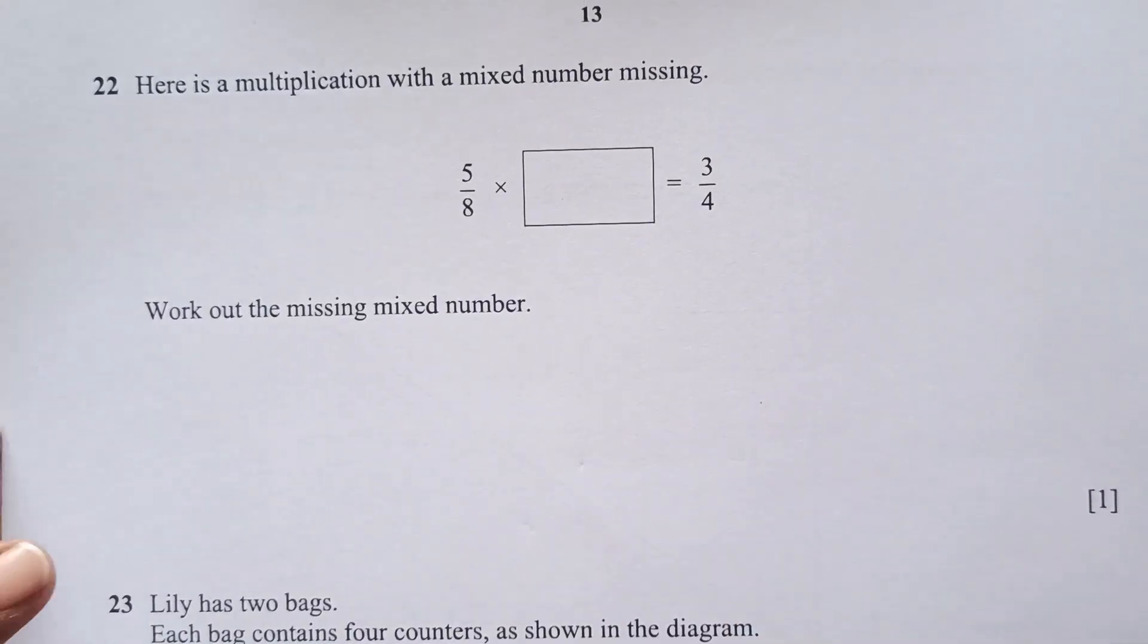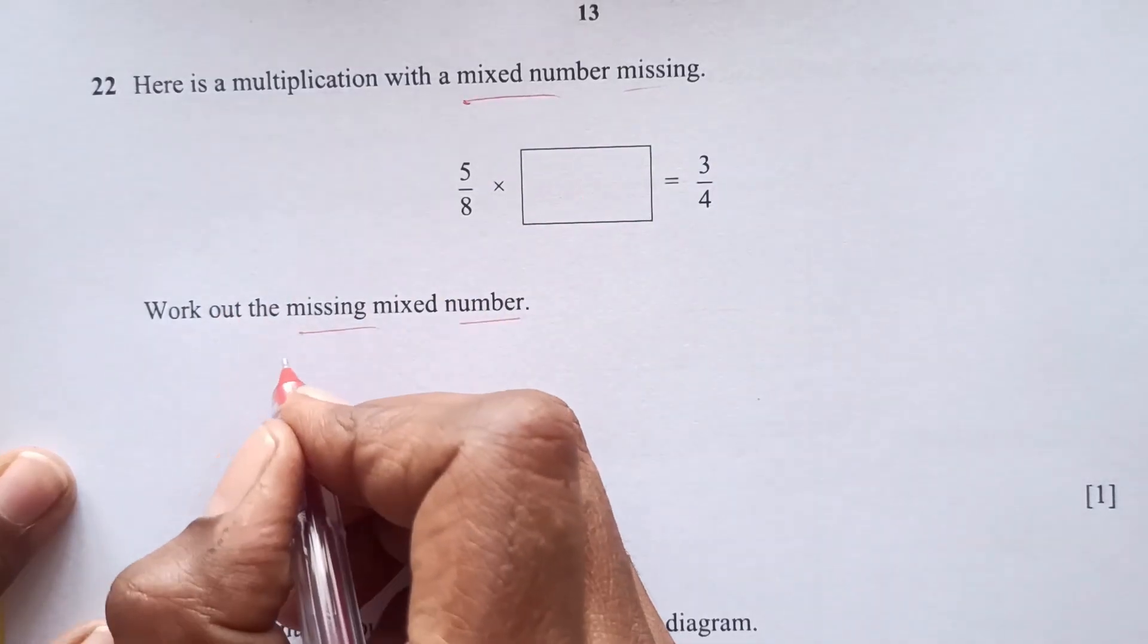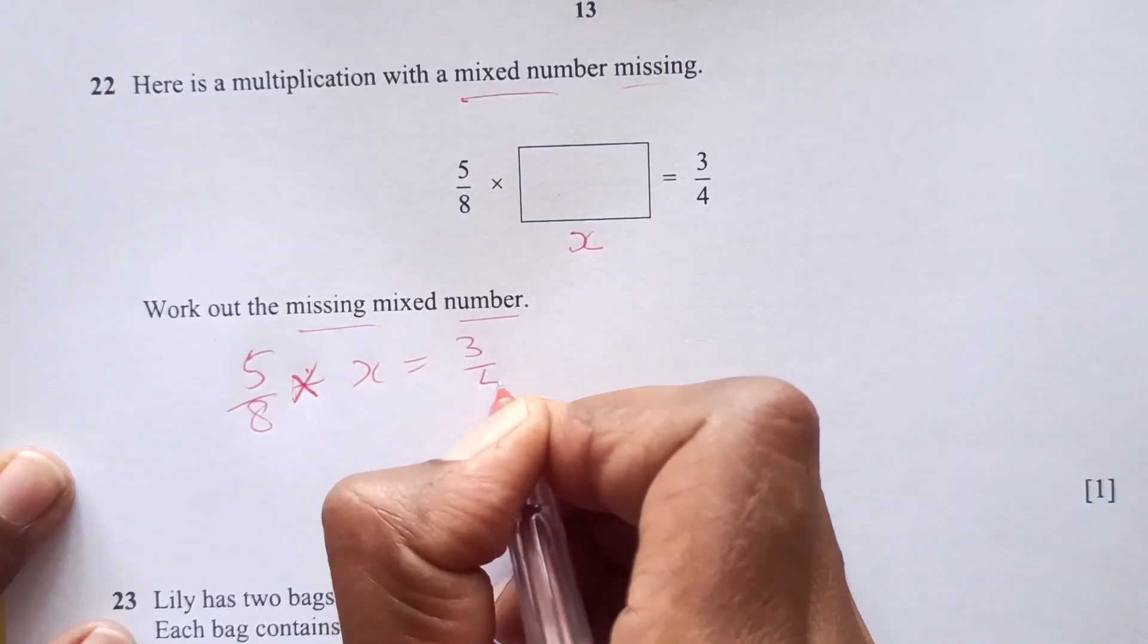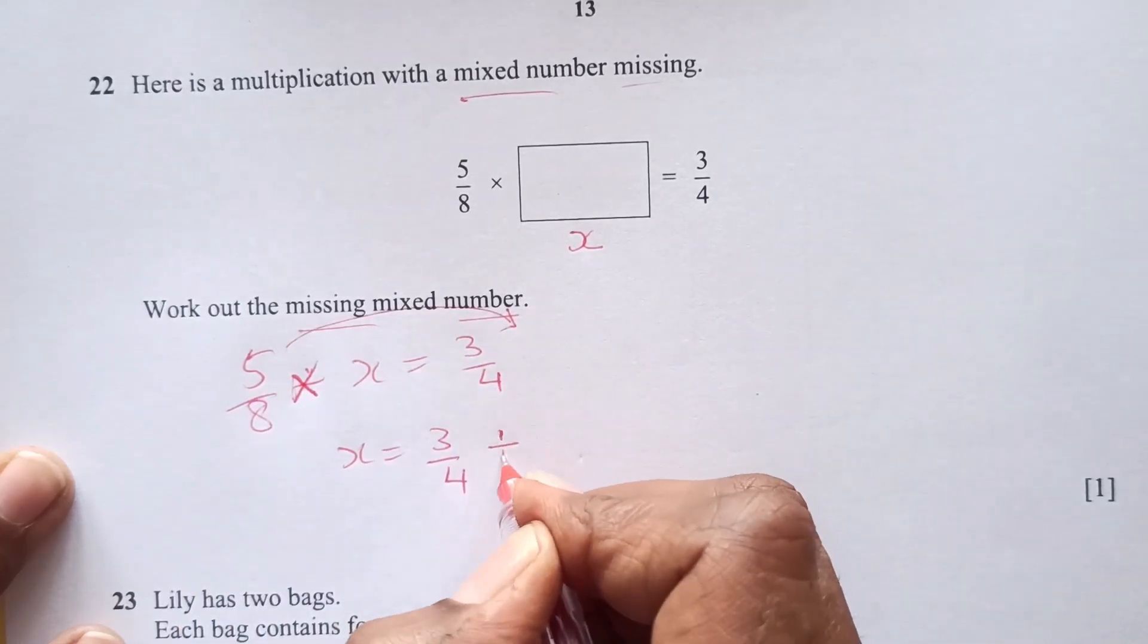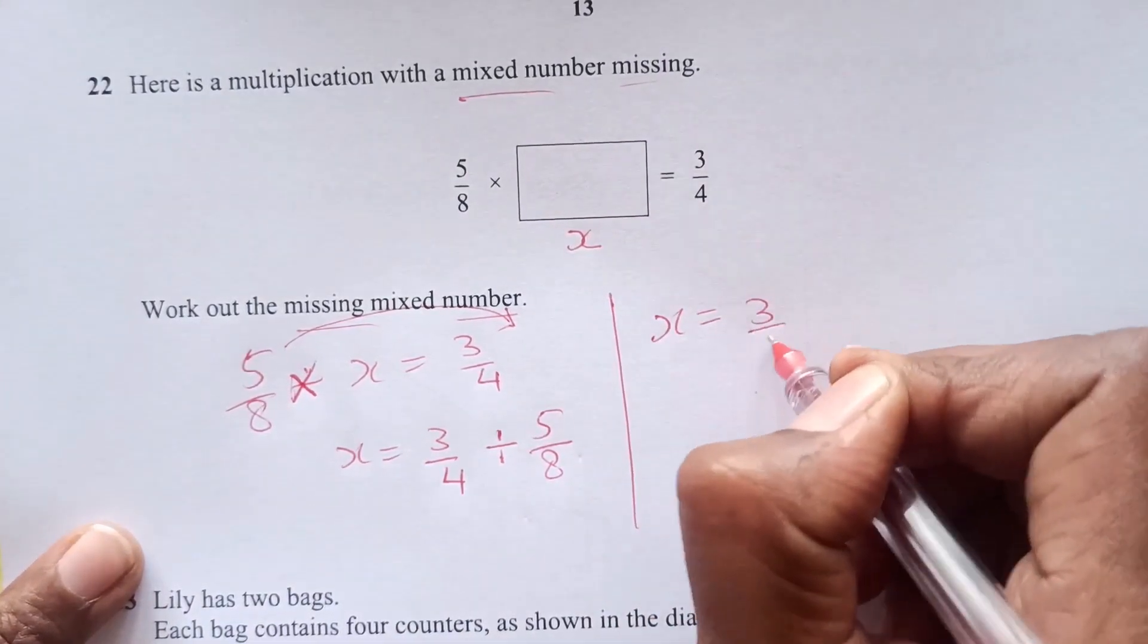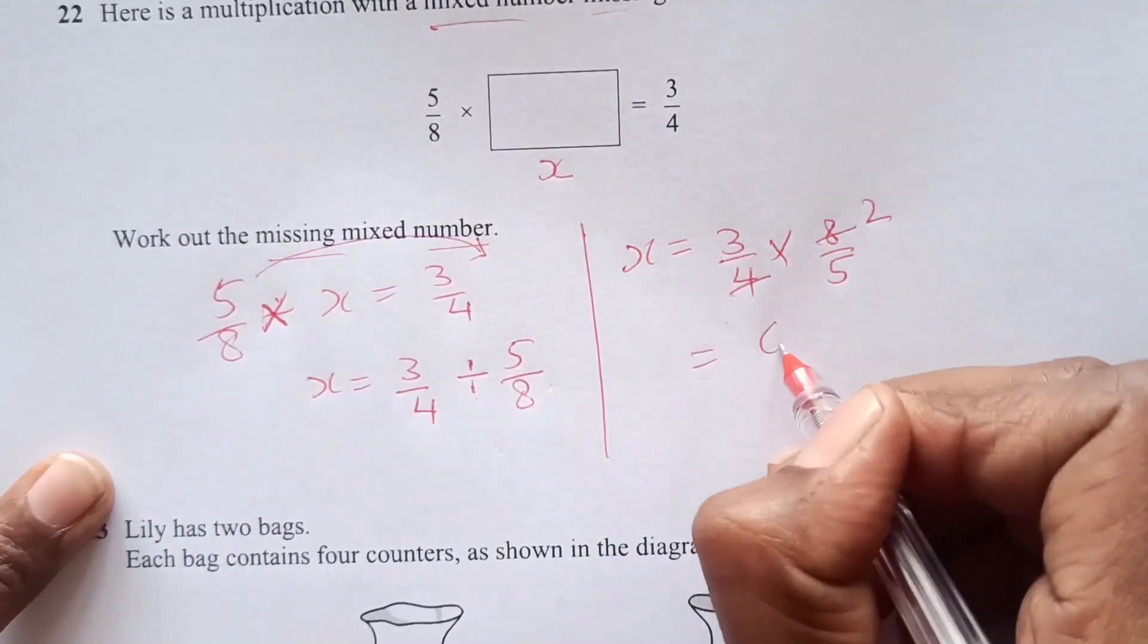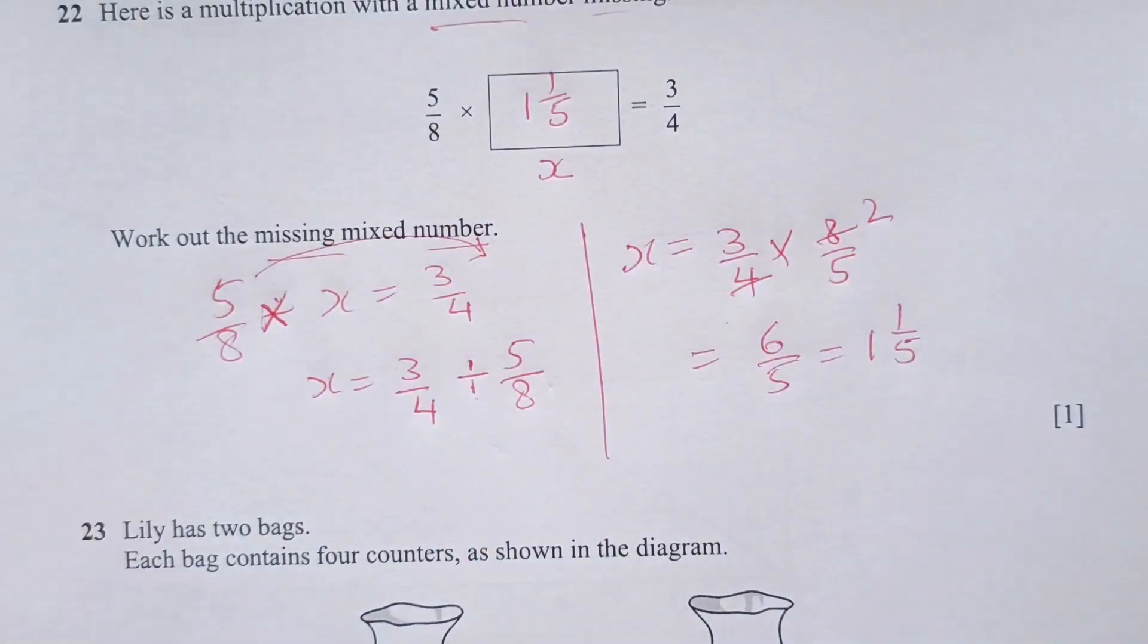Number 22. Here is a multiplication with mixed number missing. Work out the missing mixed number. This is something mixed number. Let's say this is x. 5/8 times x is 3/4. Then x will be 3/4. When you take this 5/8 to the other side, it will be divide. Then x equals 3/4, change this to multiply and take the reciprocal of that. You simplify 4 times 2 is 8. This is 6/5, that can be written as 1 and 1/5.